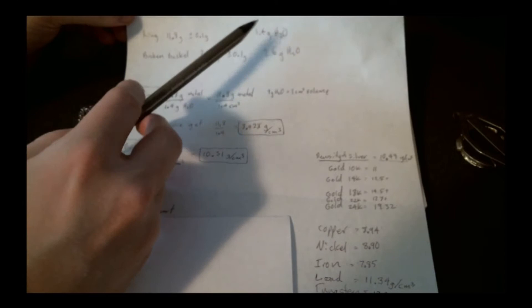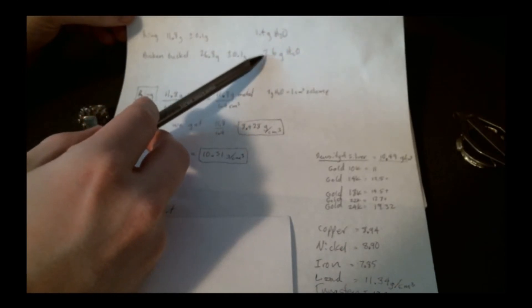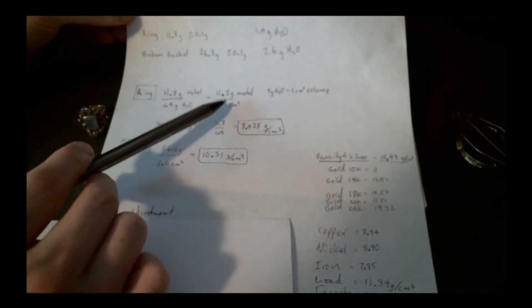So once you have the weight of the object and the amount of water that are displaced in grams, what you do to calculate it is you take the weight of the object and you divide it by the amount of water in grams. Now the amount of water in grams is equal to the amount of centimeters cubed that were displaced. That's how you get mass over volume.